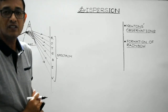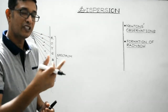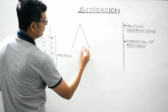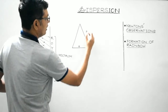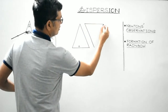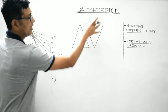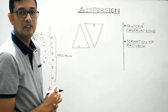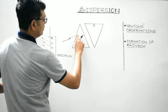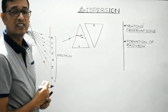Another observation Newton made was that he placed another identical prism in an inverted position with respect to the first one. Suppose this is the first prism and this is the second prism — identical to the first one, placed in an inverted position. White light enters, and here it splits up into 7 constituent colours. I am showing only the extreme colours.